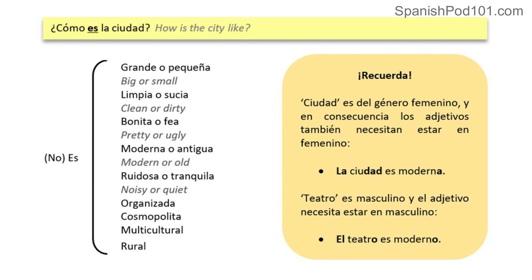Remember — ciudad es de género femenino, and consequently, los adjetivos también necesitan estar en femenino. The city in Spanish is feminine gender, so everything we use to describe the city — the adjectives — will also have to be in femenino. So we have to say: la ciudad es moderna. Teatro, for example, es masculino, and the adjective we use must be in the masculine form: el teatro es moderno.